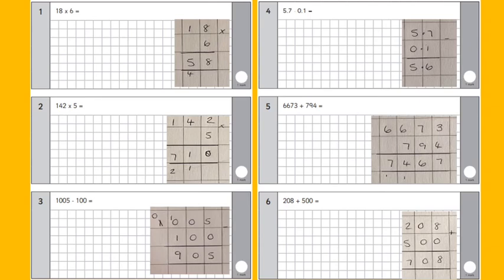Number three, you've got 1005 subtract 100. This one, you could have done in your head definitely, but if you're not too confident with exchanging across values, do it with a method, which is 905.